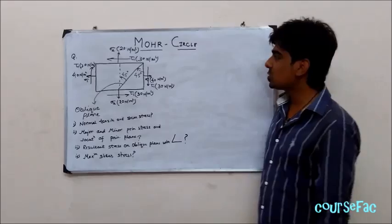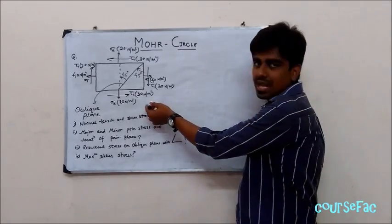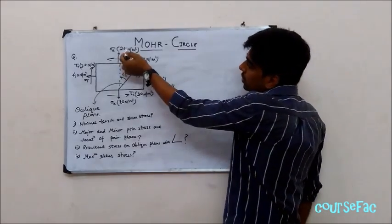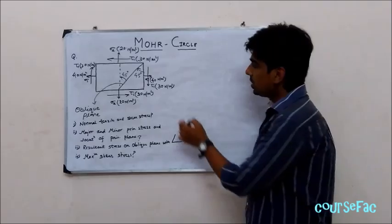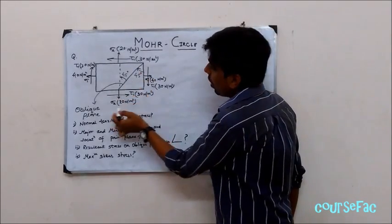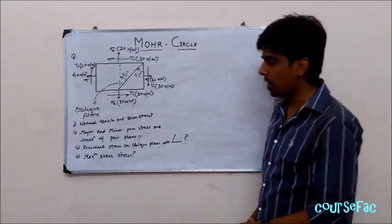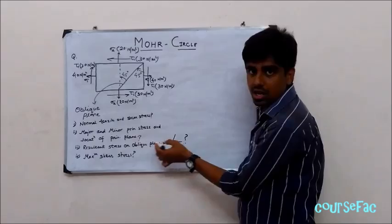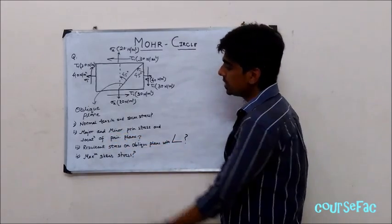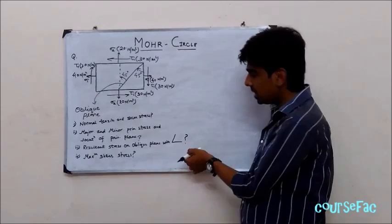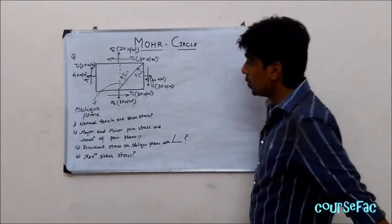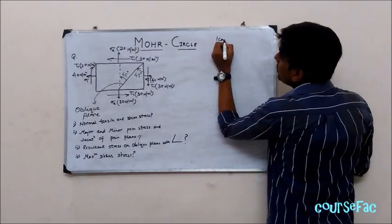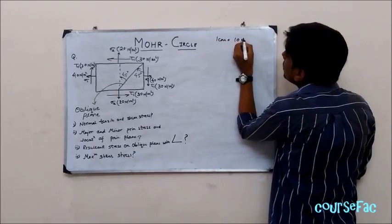I would like to explain Mohr Circle through this example. The body is subjected to direct stresses of 40 N/m² and 20 N/m², and a shear stress of 20 N/m², with the oblique plane at a given angle. We need to find: the normal and shear stress; the major and minor principal stress and location of the principal plane; the resultant stress on the oblique plane with its angle; and the maximum shear stress.